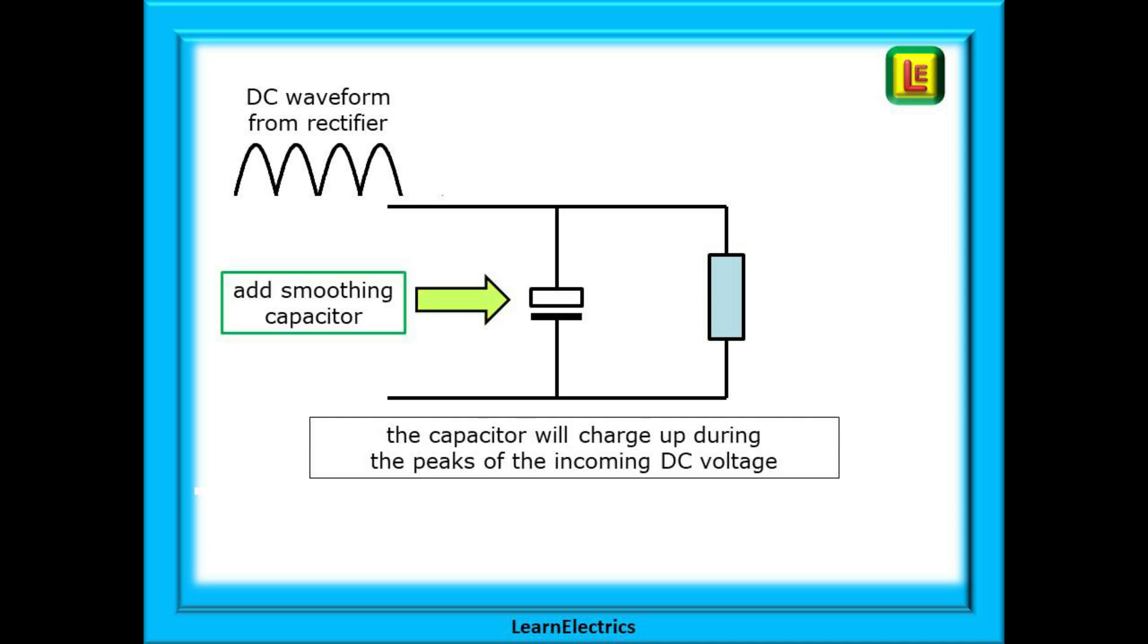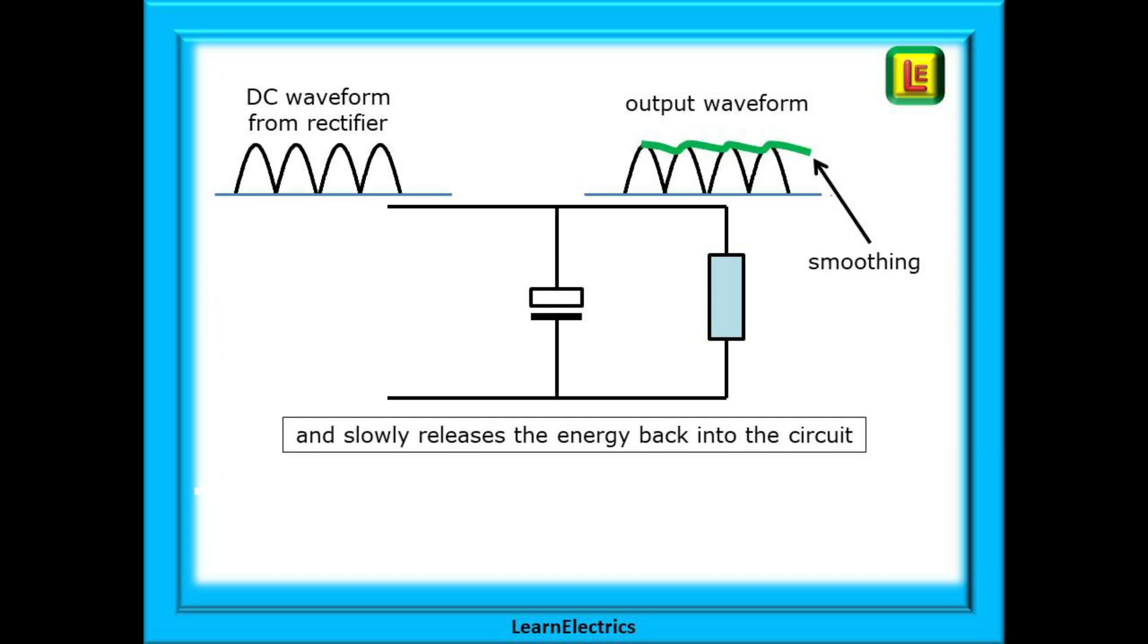We should always add a smoothing capacitor to the circuit. The capacitor will charge up during the peaks of the incoming DC voltage and slowly release the energy back into the circuit as shown by the green line at the top right. This green waveform still has some ripples on it but it is a lot smoother than before.